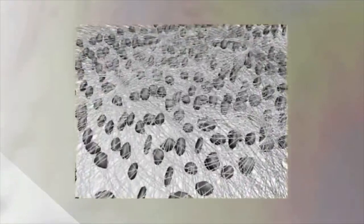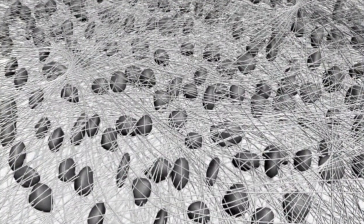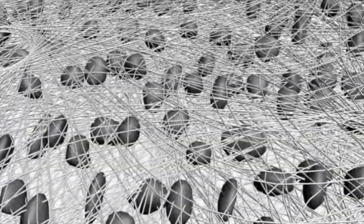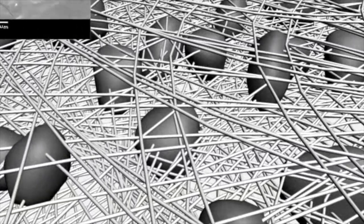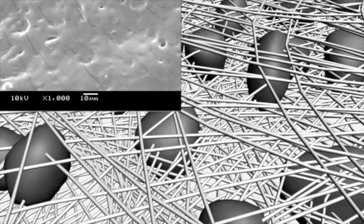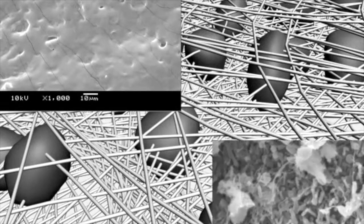Looking deep into the structure of the biomat geotextile at microscopic level, it's evident that not only does the floating mat effectively trap oil particles, it also provides a self-maintaining ecosystem with bacteria digesting the trapped hydrocarbons and protozoa regulating the bacteria.